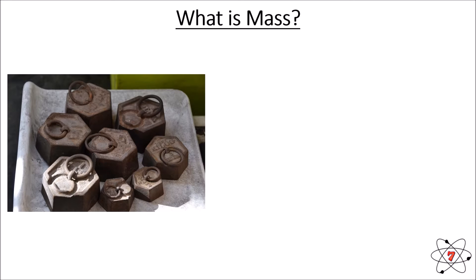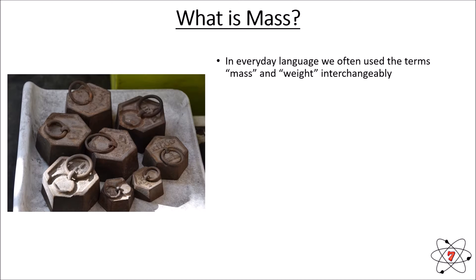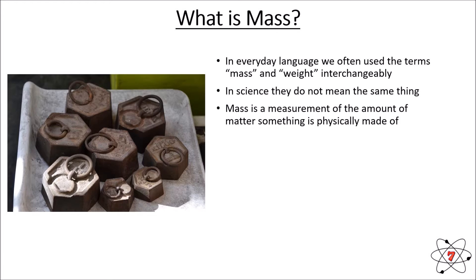First of all, let's start off with what mass is, because before we can really understand what weight is, we need to understand what mass is. What's really important to point out is that in everyday language we use the terms mass and weight interchangeably, and even scientists will use the words in the wrong manner in everyday language. However, they do not mean the same thing in science. Mass is a measure of the amount of matter that something is physically made up of — how much stuff or matter something is made up of — and we measure mass in grams or kilograms, which are our SI units of mass.